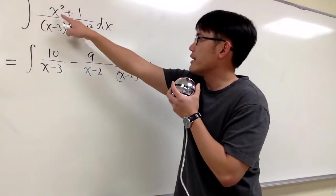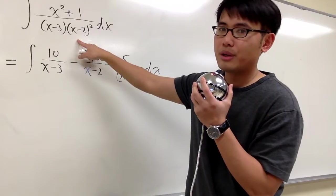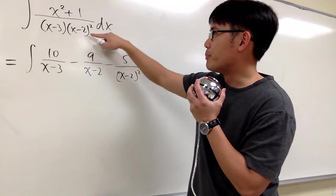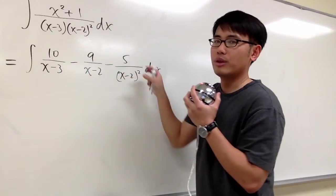Let's talk about how we can integrate x squared plus 1 over x minus 3 times x minus 2 to the second power. And you guessed it, we have to do partial fraction to break down this big giant fraction into some smaller ones.